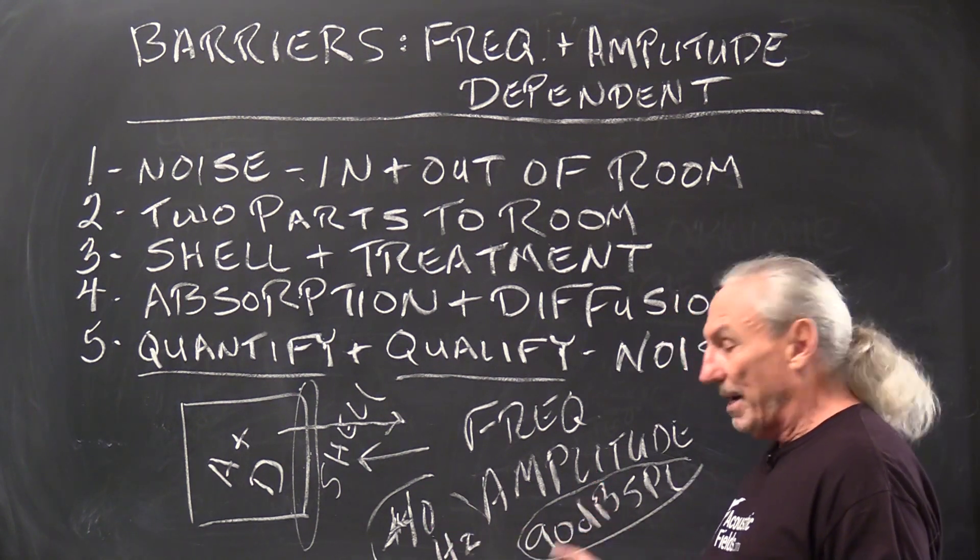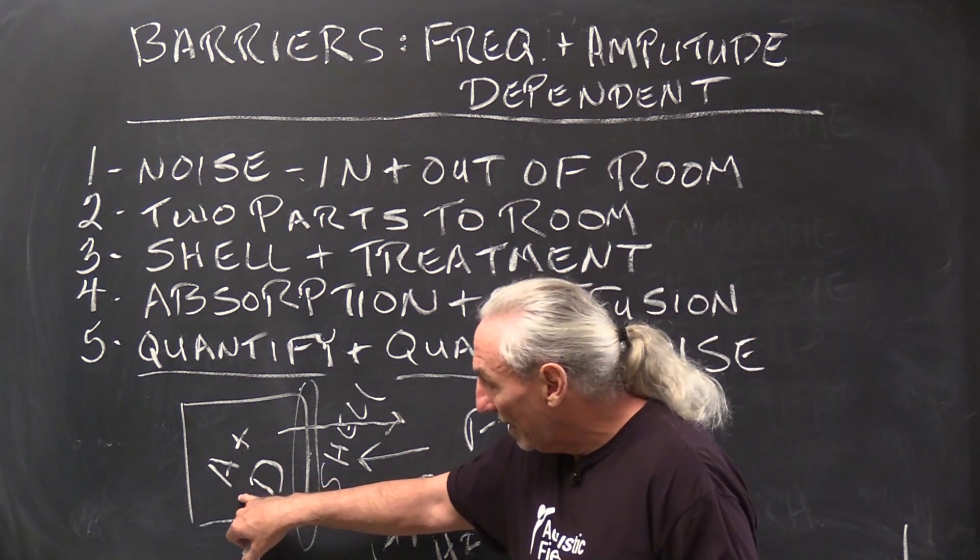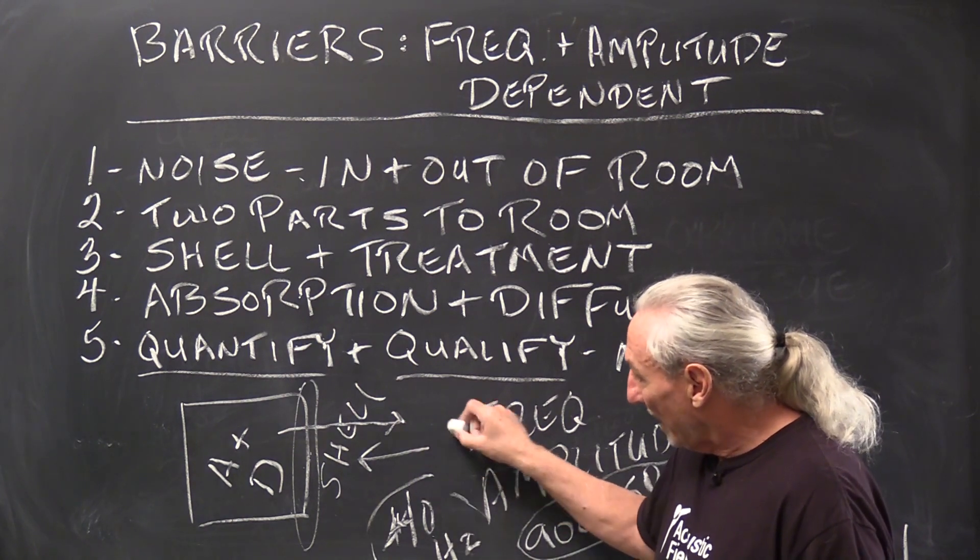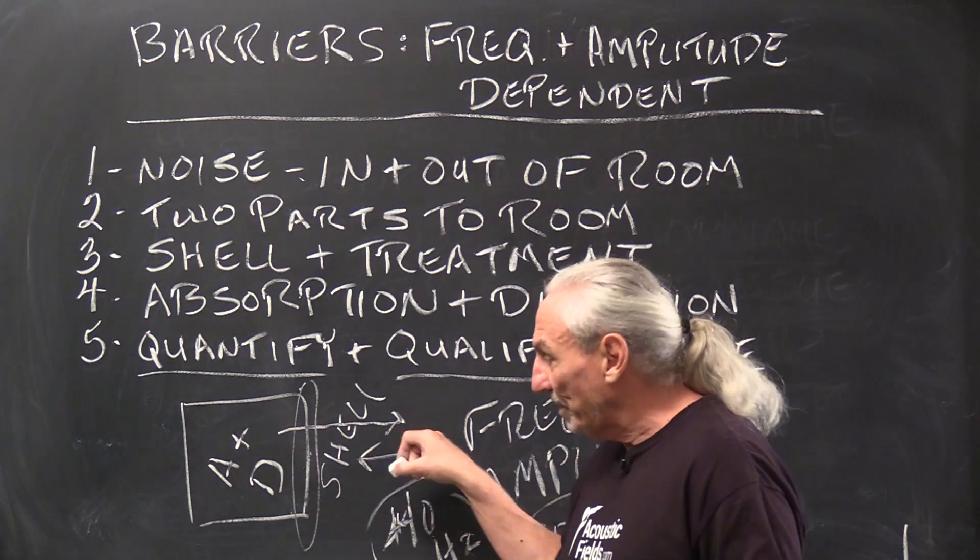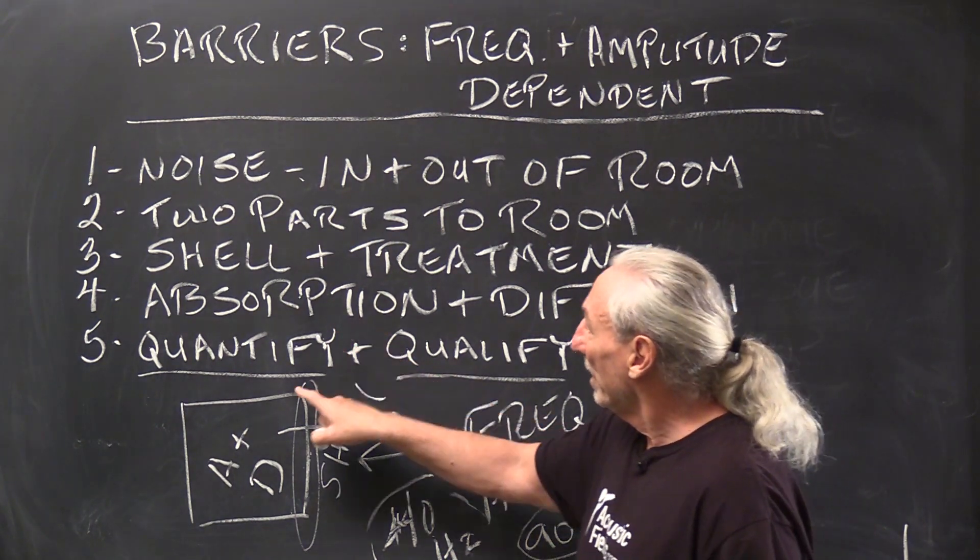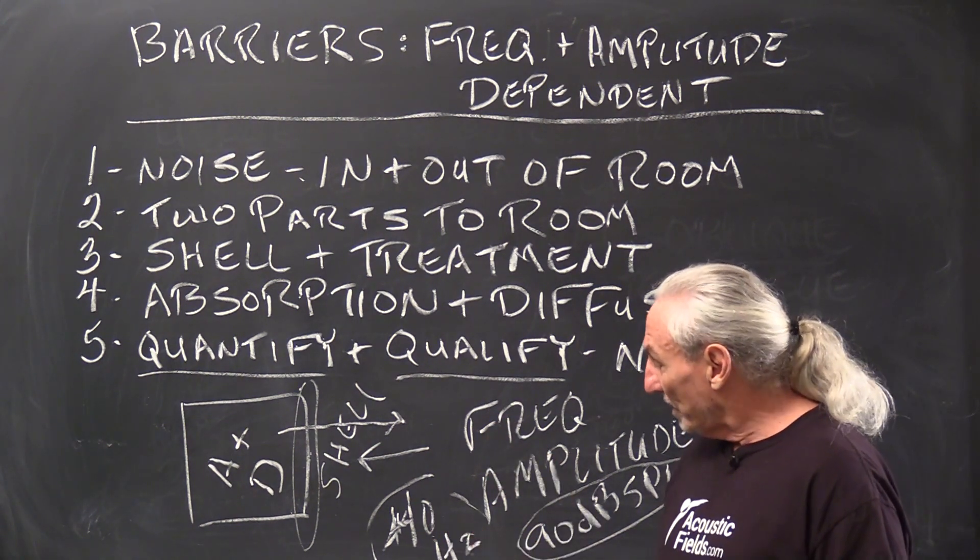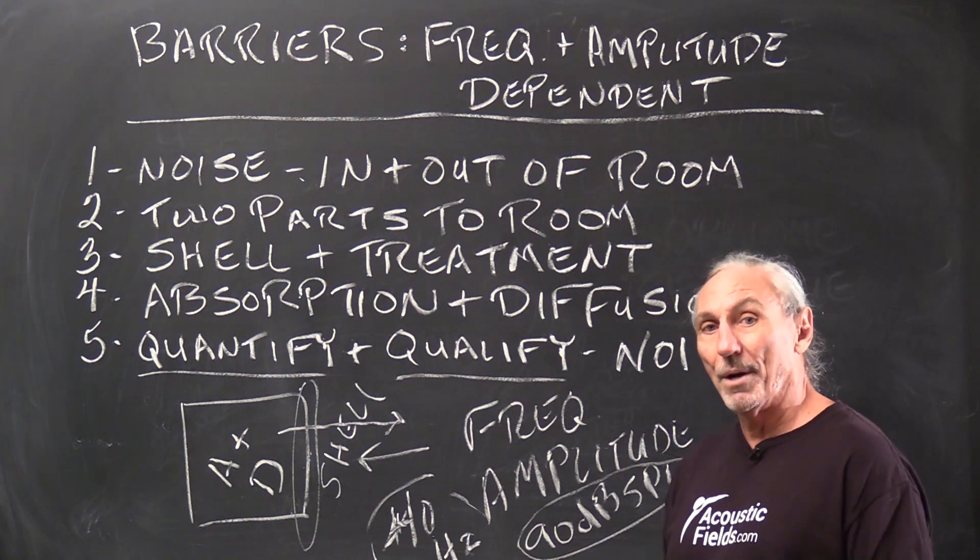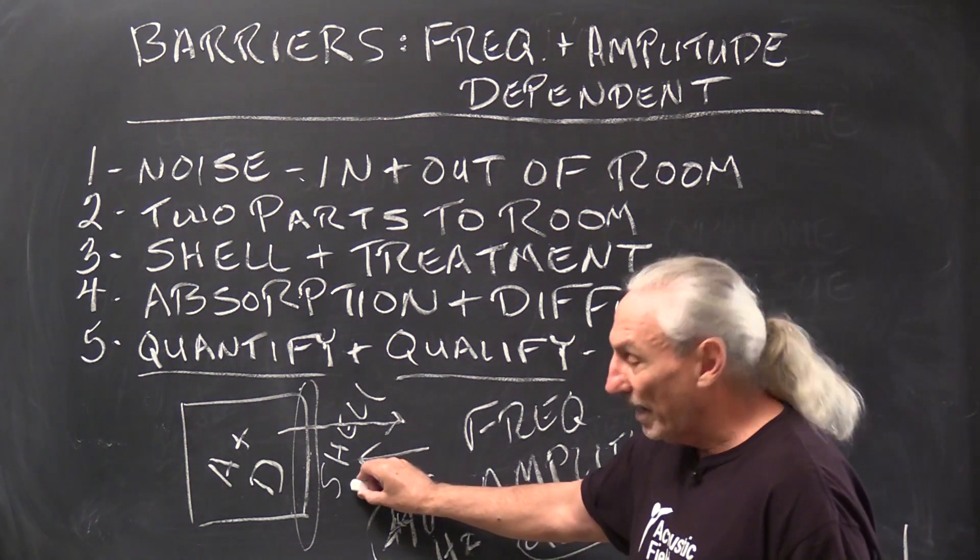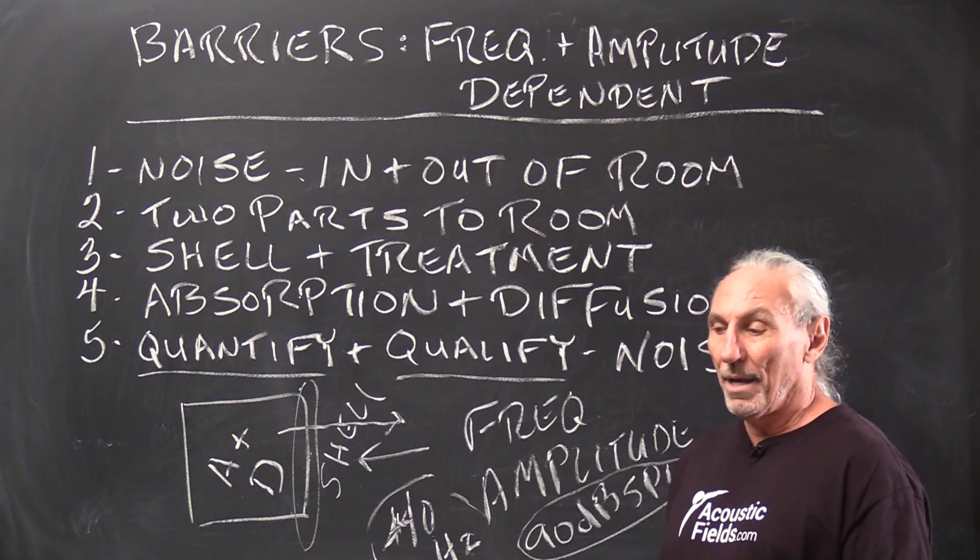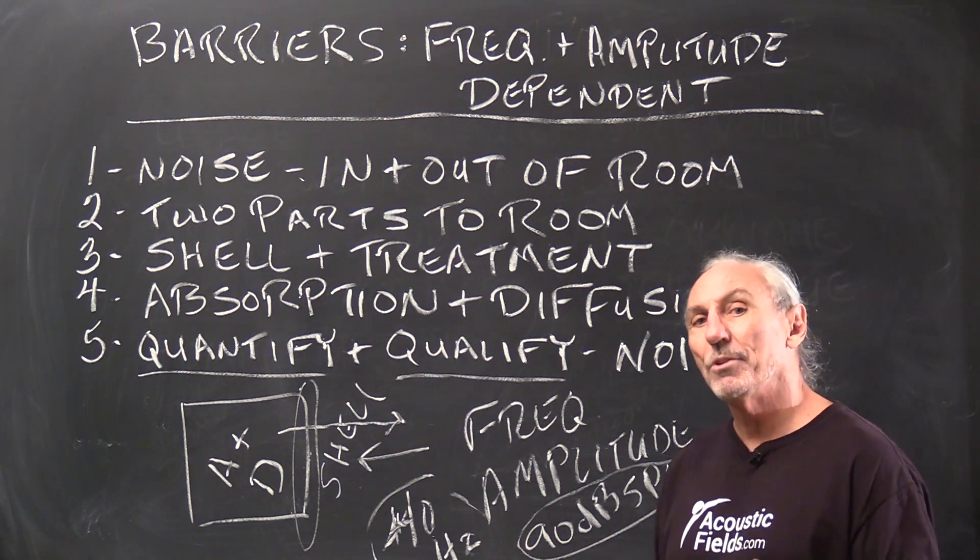So for every frequency and amplitude there is a material that we have to use. And it doesn't matter if the noise is coming from the room and leaving or coming outside and coming into the room. We need to build a barrier that stops this two-way interaction. And the barrier is frequency and amplitude dependent. The materials that we use to stop this 40 cycle energy at 90 dB from a garbage truck is different than the materials we use to stop people from talking outside the room. Completely different. And there's really no place that you can go that's going to tell you what materials to use. You have to use experience.